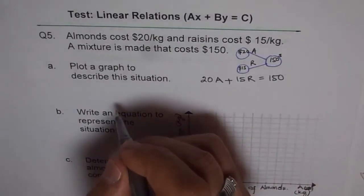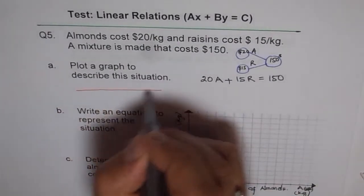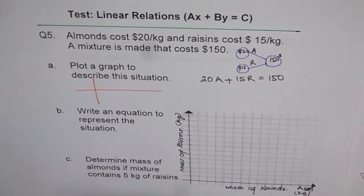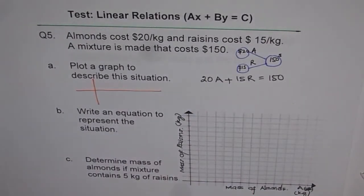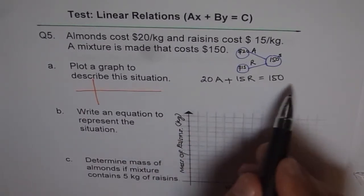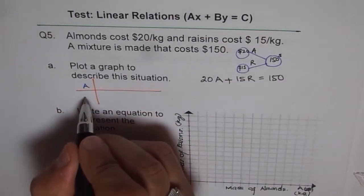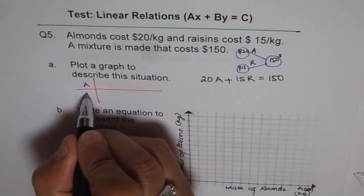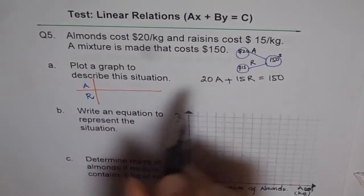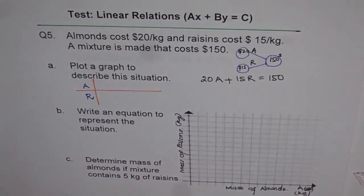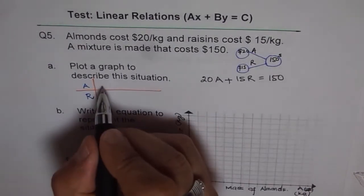We will make a table of values here. And the whole idea is that we will give some values to A and find the value of R so that this equation is satisfied. So we will give some values to A and then find the value of R, which will give me a total of 150.